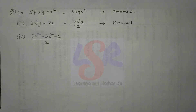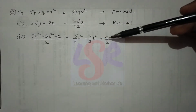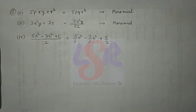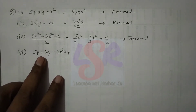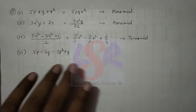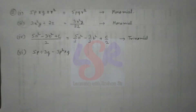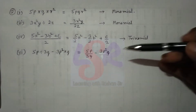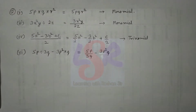For the fourth part, the expression breaks into three terms, so it is a trinomial. For the sixth part, there is a division sign and a multiplication sign. Solving those, we can see there are two remaining terms, so this expression is a binomial.